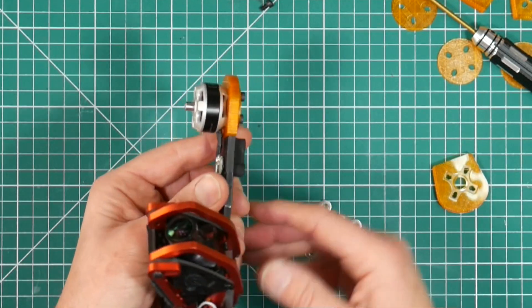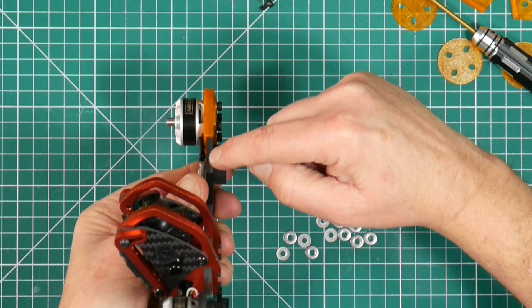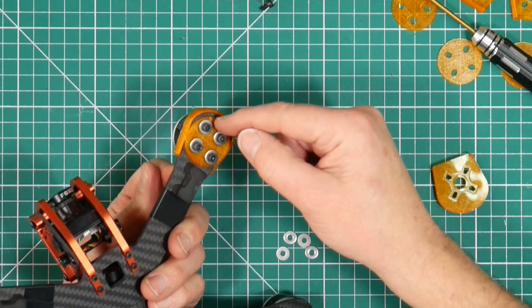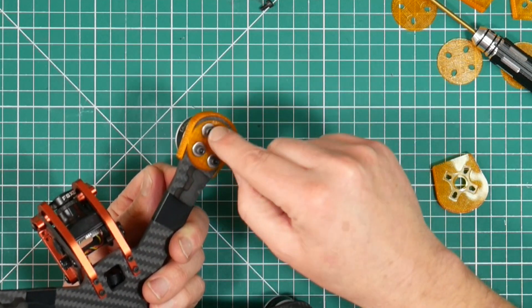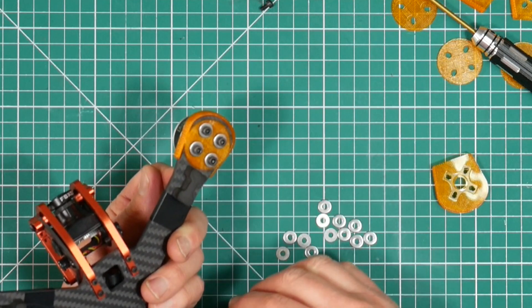You can see how this works. This frame protector isolates the motor from the frame itself, and the bottom mount isolates the bolt from the bottom of the frame using the washer on this side between the TPU mount and the frame itself.